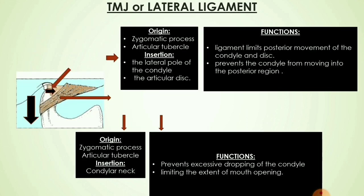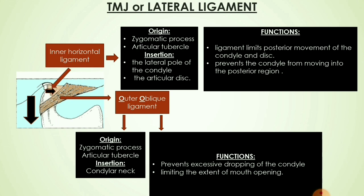The temporomandibular ligament (lateral ligament) has two portions. The first is the outer oblique ligament and the second is the inner horizontal ligament. The origin for both is the zygomatic process and articular tubercle. The outer oblique ligament inserts at the condylar neck and prevents excessive dropping of the condyle by limiting mouth opening extent. The inner horizontal ligament attaches to the lateral pole of the condyle and articular disc, limiting posterior movement of the condyle and disc.